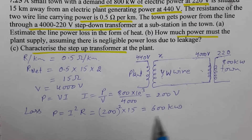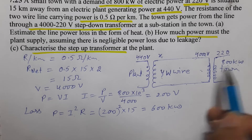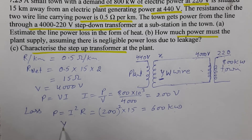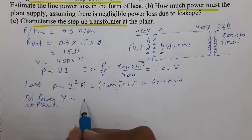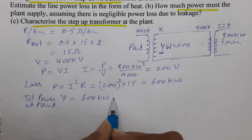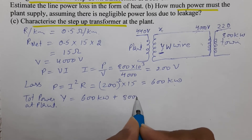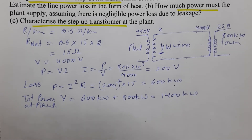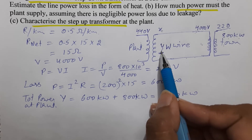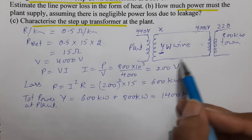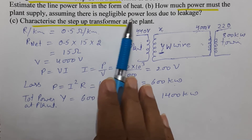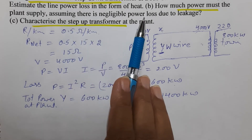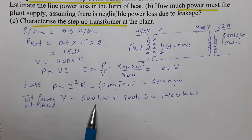So in the wire, there is a power loss of 600 kilowatts. The town needs 800 kilowatt supply. Therefore, the total power that the plant must generate is 600 kW + 800 kW = 1400 kilowatts. The plant supplied 1400 kilowatts and 600 kilowatts was lost as heat. The two parts of the question ask for: the power loss (heating loss) and the characterization of the transformer at the plant.